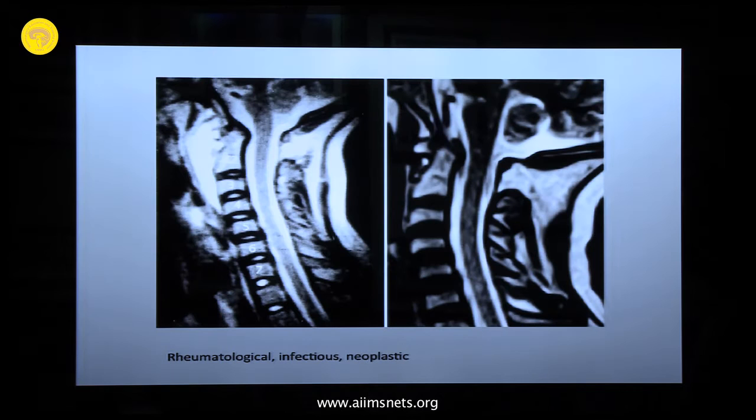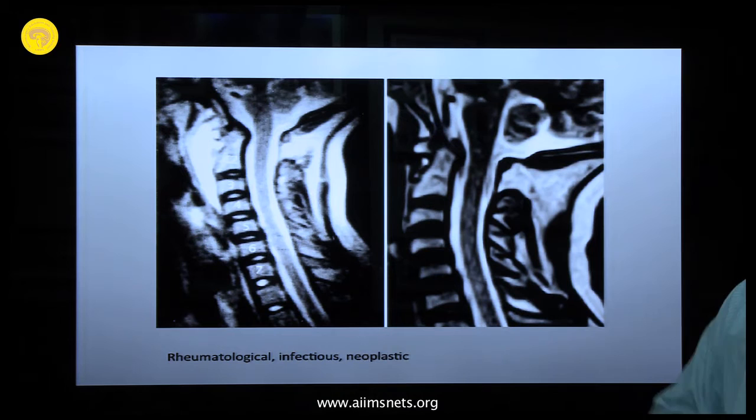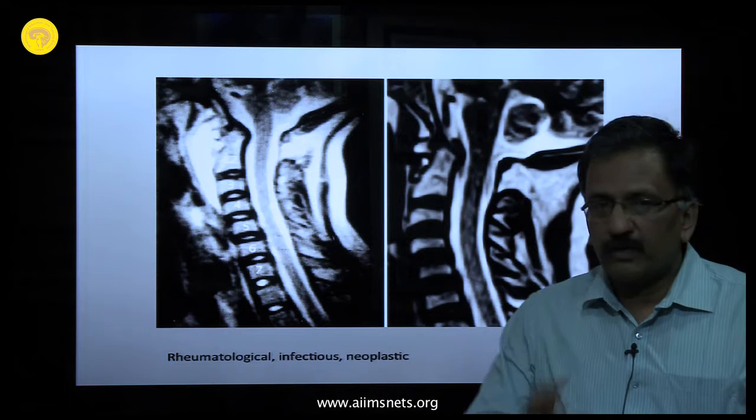Then tuberculosis and rheumatoid arthritis. During my Commonwealth Fellowship — published in Neurosurgery — we found that whenever small segment fixation was done for rheumatoid arthritis, it always failed. If you have a patient with rheumatoid arthritis and atlantoaxial dislocation, please do a complete long-segment fixation: at least two levels above and two levels below. Otherwise it will fail.